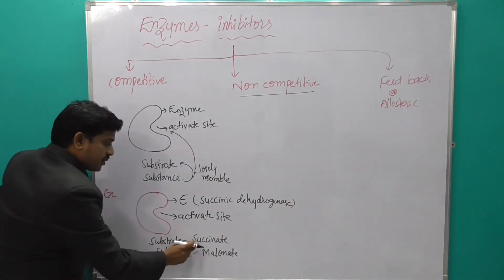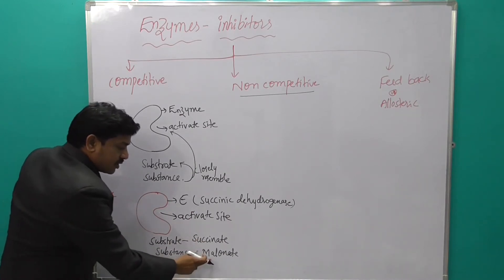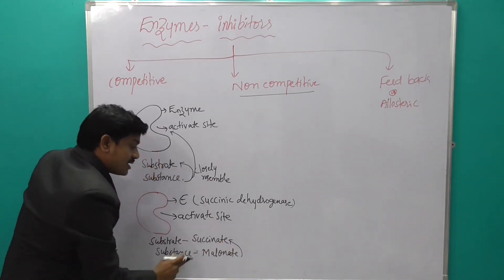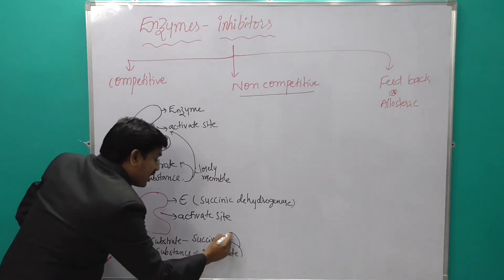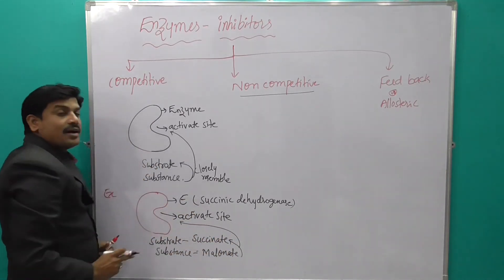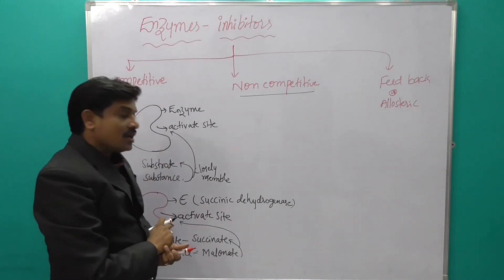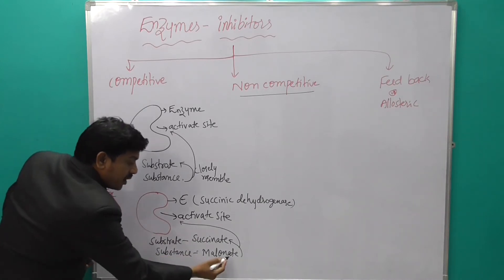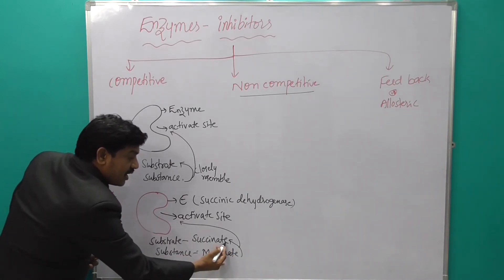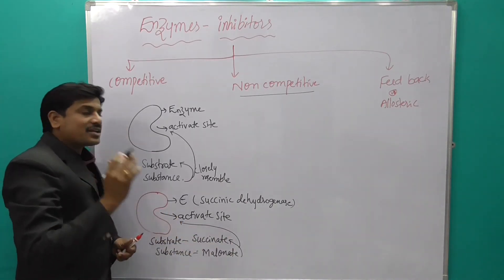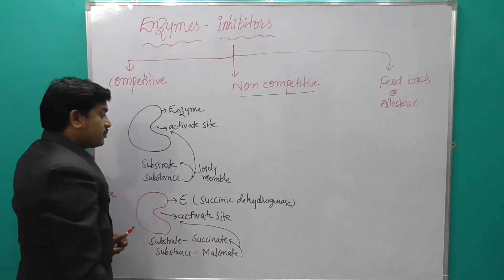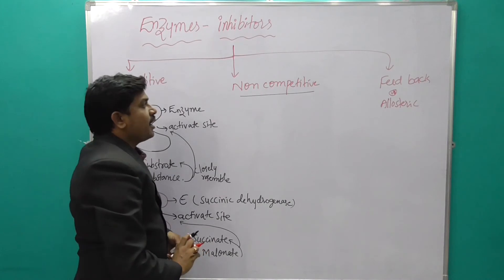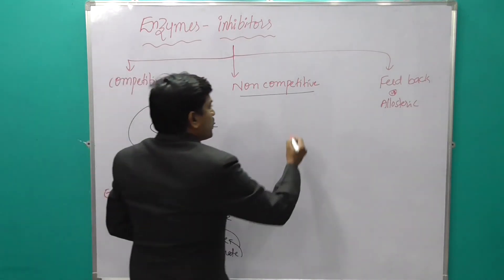So here, malonate closely resembles succinate and inhibits the active site of the succinate dehydrogenase enzyme. This is the best example of competitive inhibitors. Next, we will look at non-competitive inhibitors.